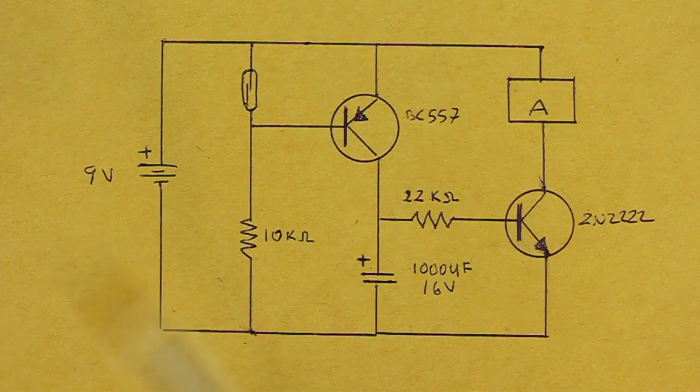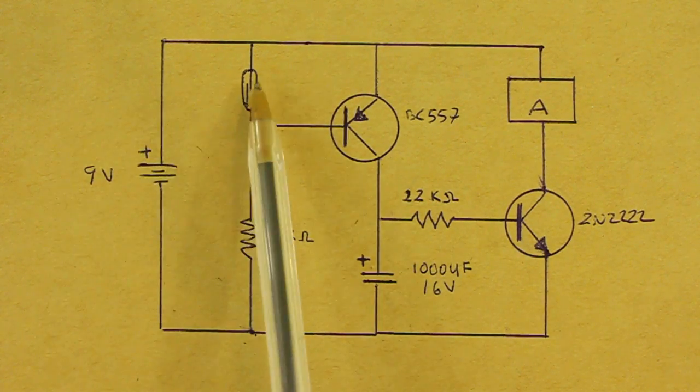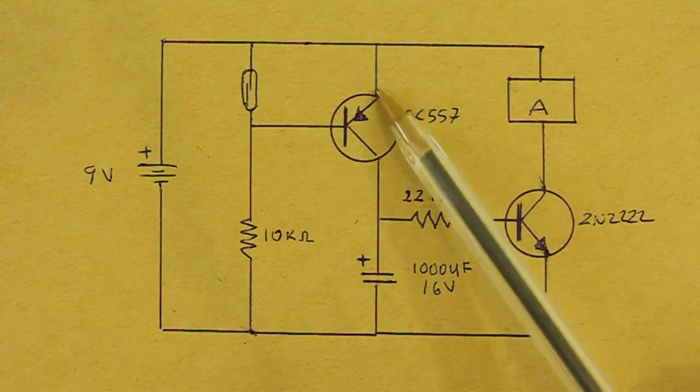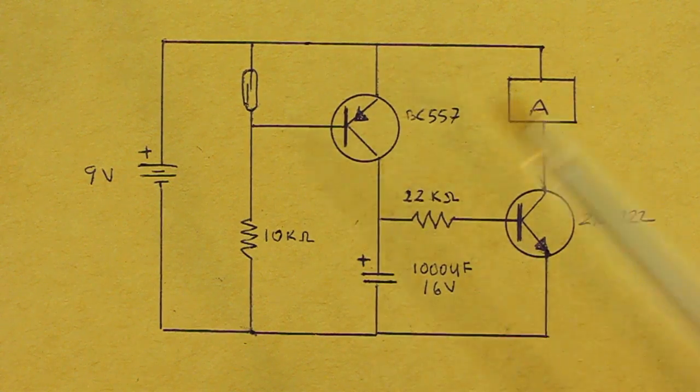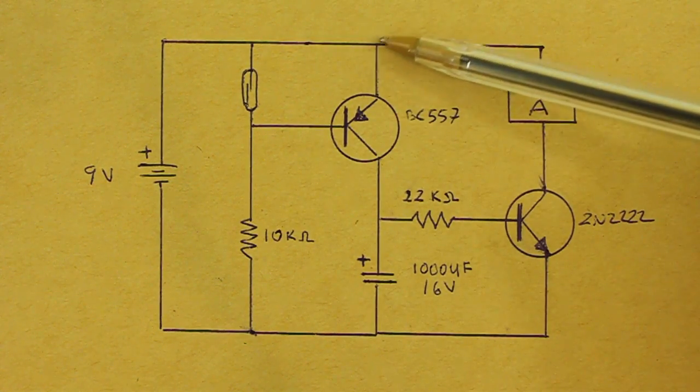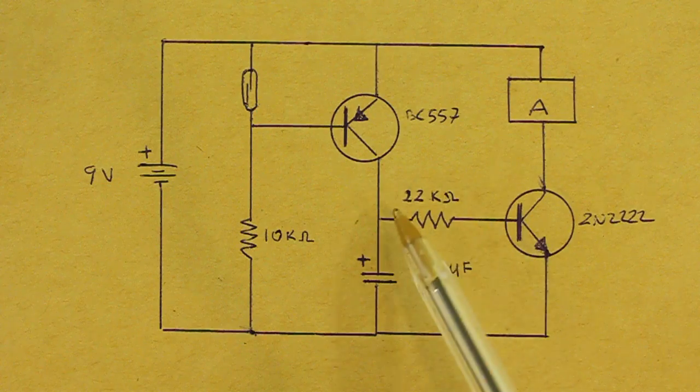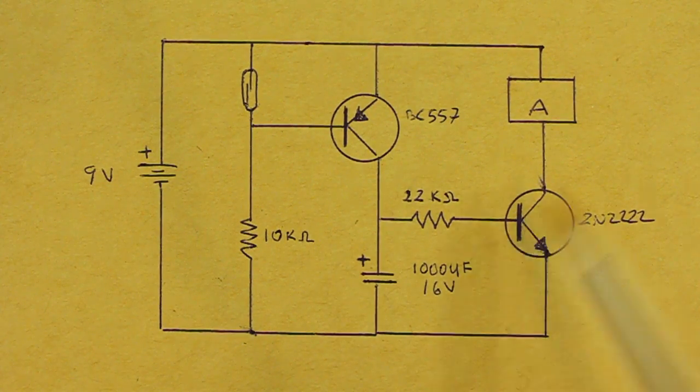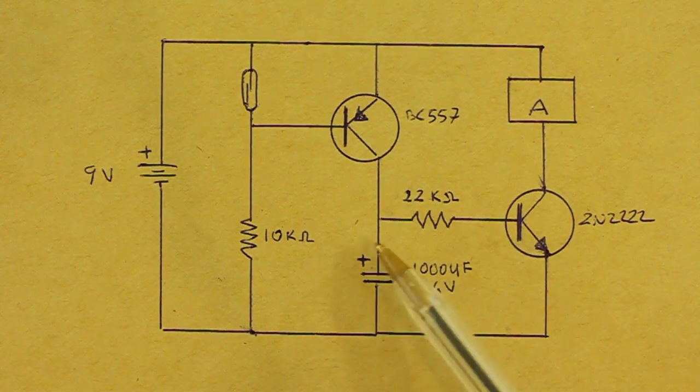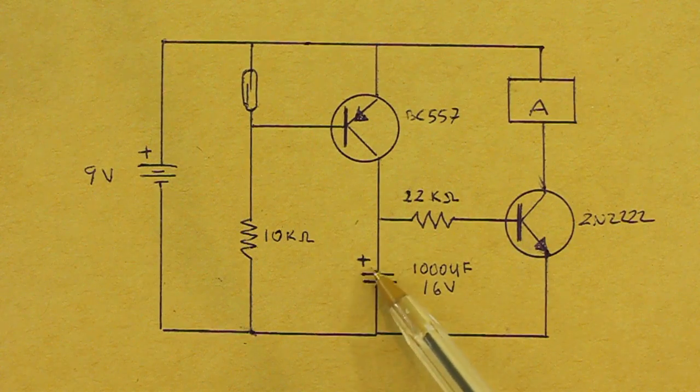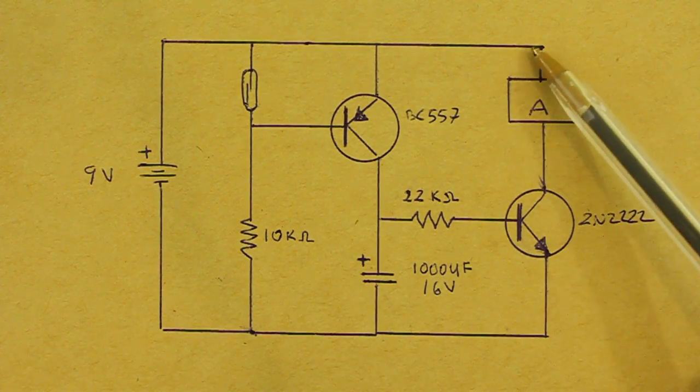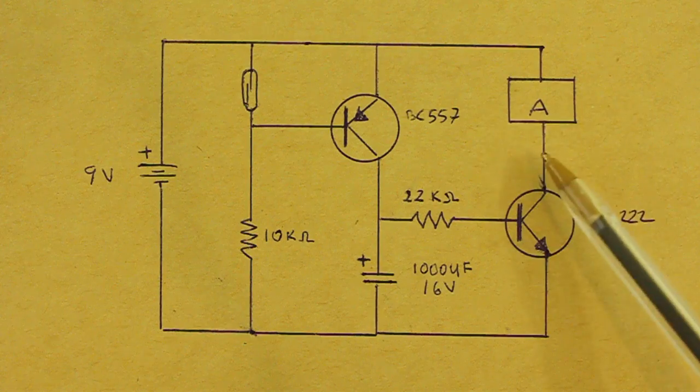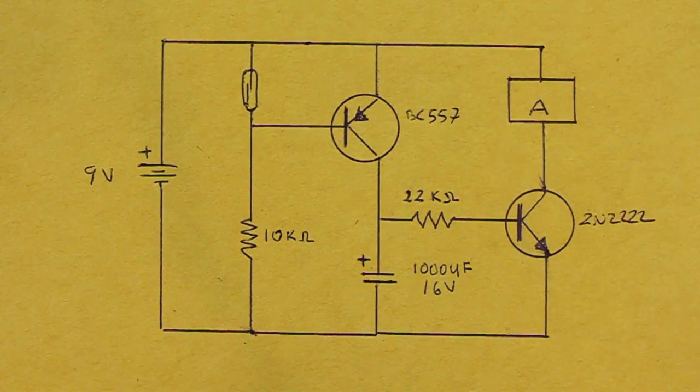Then when we move the magnet away the switch opens and this transistor is now on so the current can flow to the base of the other transistor and also to the capacitor which is charged. Now this transistor is on and the current flows through the alarm and the alarm starts.